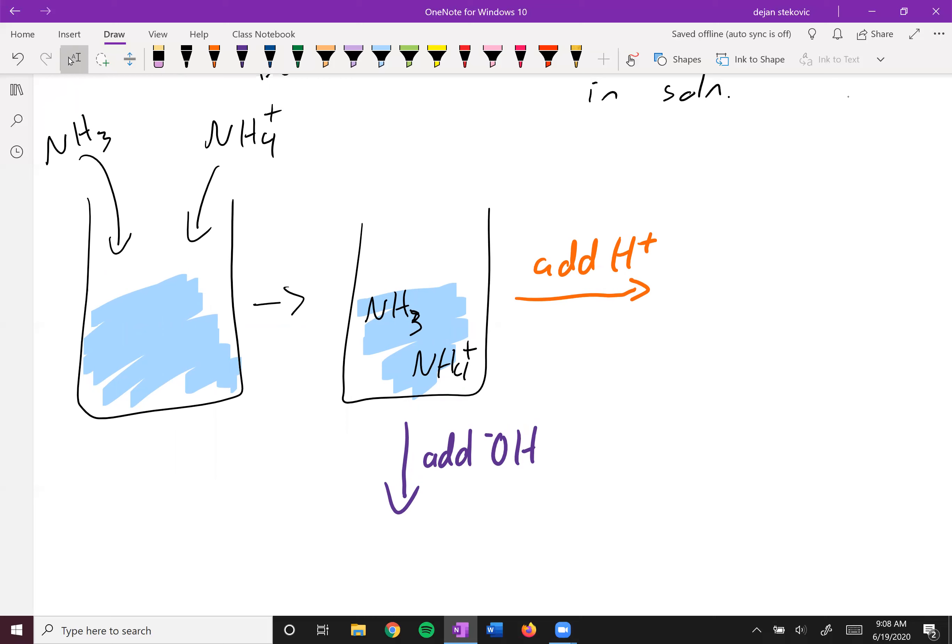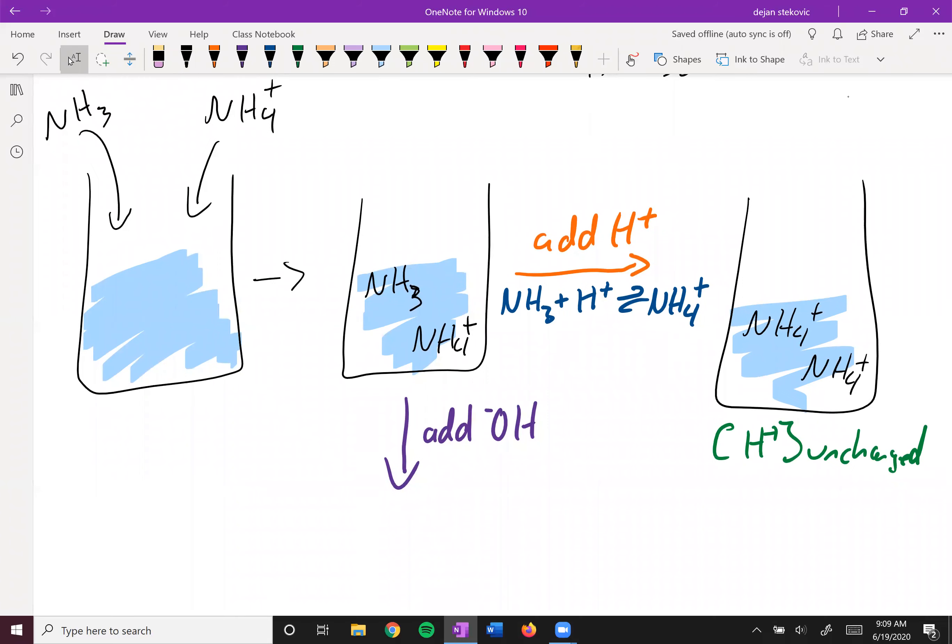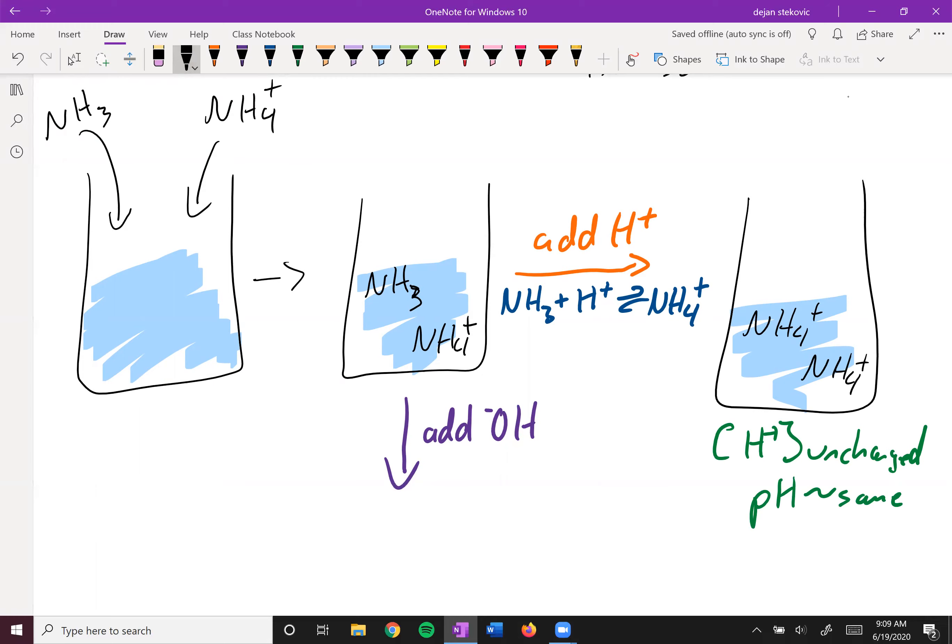But in these buffered solutions, our weak acid-base pair instead accepts the H+ or donates an H+ to prevent the water from being affected. So when we add an H+ in this upper example, instead of that interacting with water, it interacts with our weak base. Our NH3 will instead sacrifice itself to buffer the solution from the effects of the change in pH. In this example here, we would now have two NH4+ ions, and you can see that the concentration of H+ is unchanged. Because our weak base buffered it, the pH is approximately the same. Our pH didn't really change - obviously this is a simplified example.